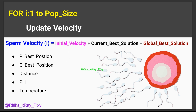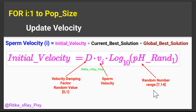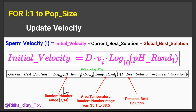We update the velocity for each sperm i using this equation: velocity equals initial velocity plus current best solution plus global best solution. The initial velocity is calculated using a damping factor D — a random value between 0 and 1 — used to adjust sperm velocity, multiplied by the current sperm velocity V_i. The pH value is taken randomly in the range 7 to 14. Then we calculate the current personal best solution by comparing past locations of the sperm with its current location.